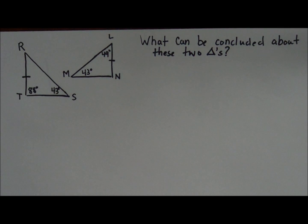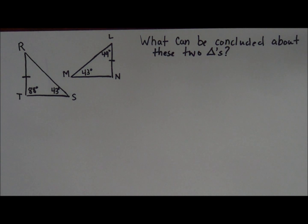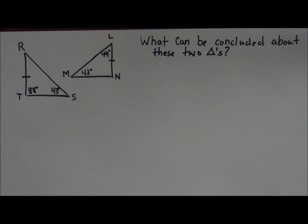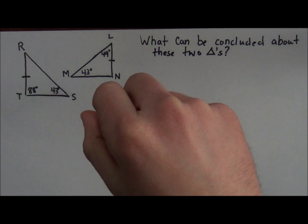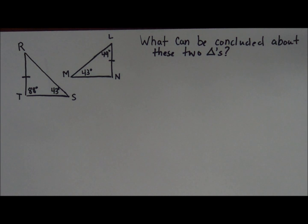We're going to talk about two triangles and we're just going to ask the question of what can be concluded about these two triangles. Basically what I want to do is compare the two. Now in geometry we're kind of looking for two main things: are they similar, or are they exactly the same triangle, which means congruent? We're going to go through some steps to talk about how we can draw a conclusion.